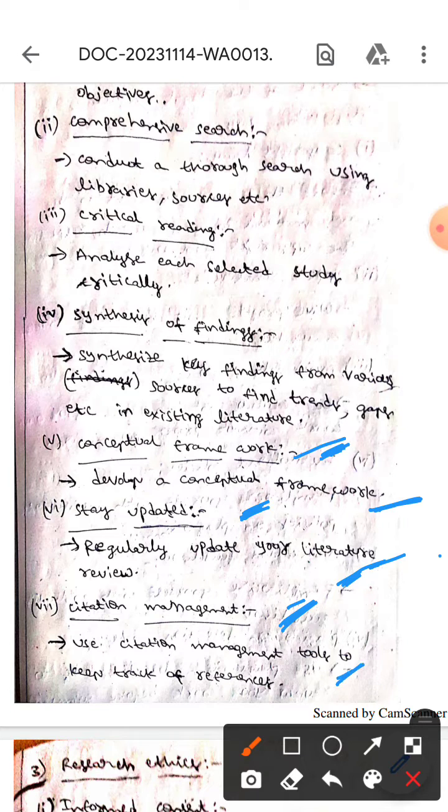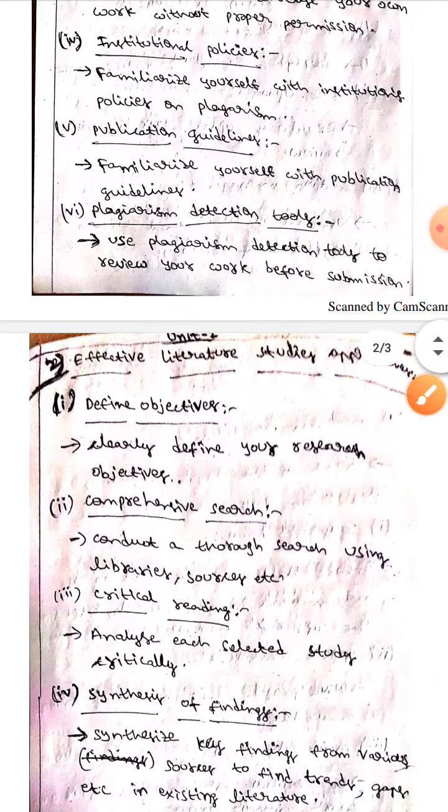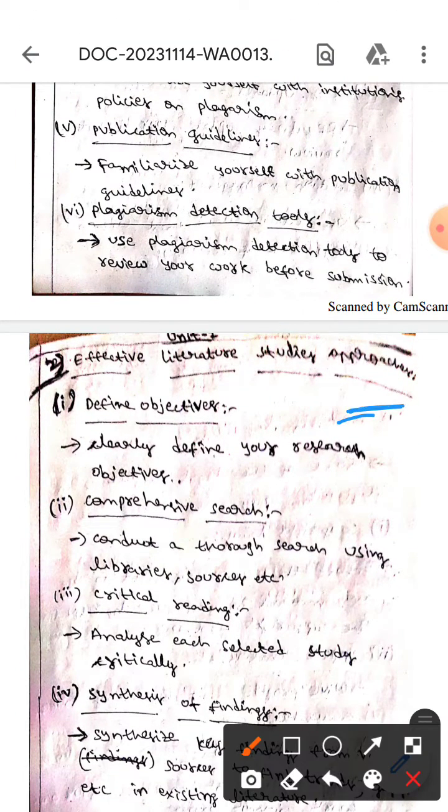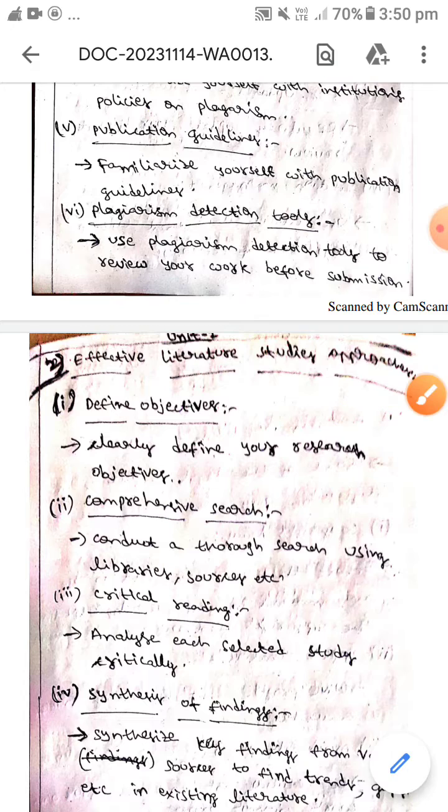The next one is citation management - here we should use citation management tools to keep track of references. This is all about the effective literature studies approaches. I hope you understand guys, thank you.